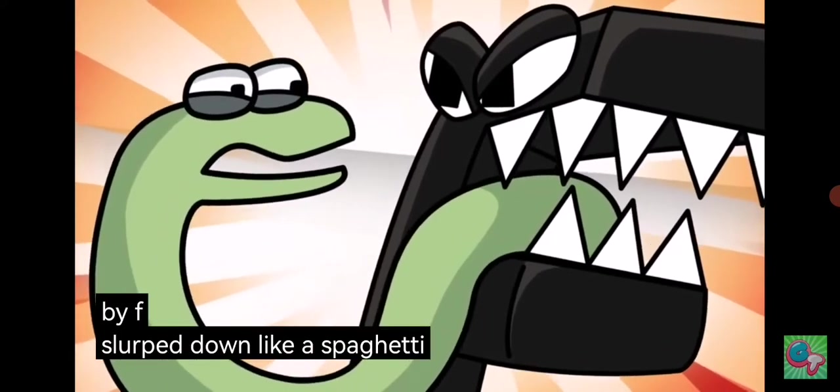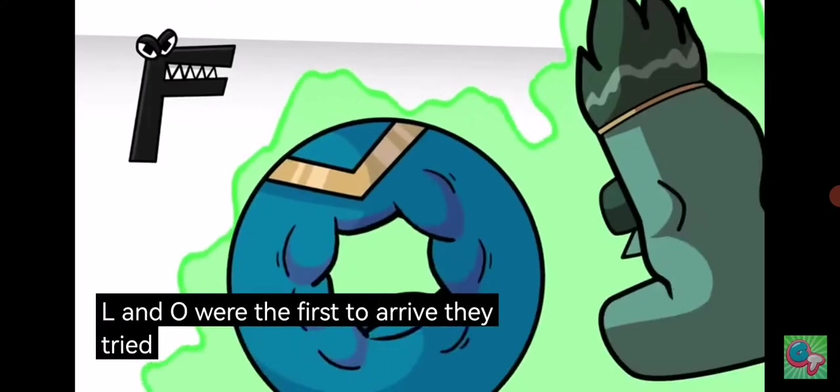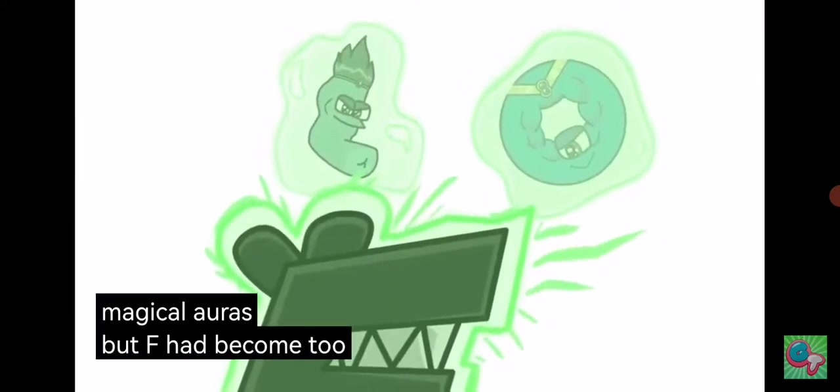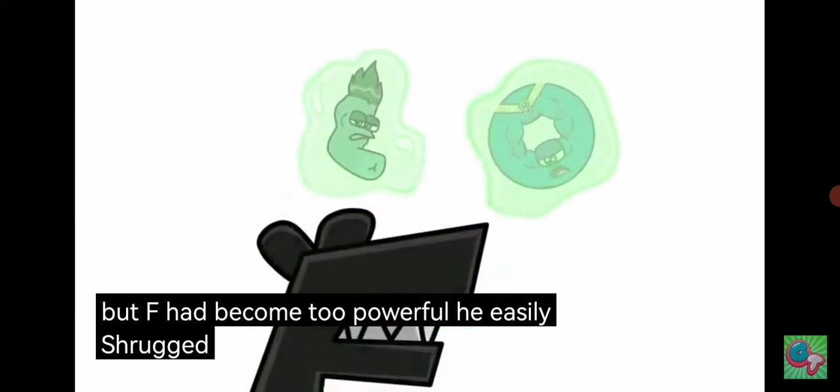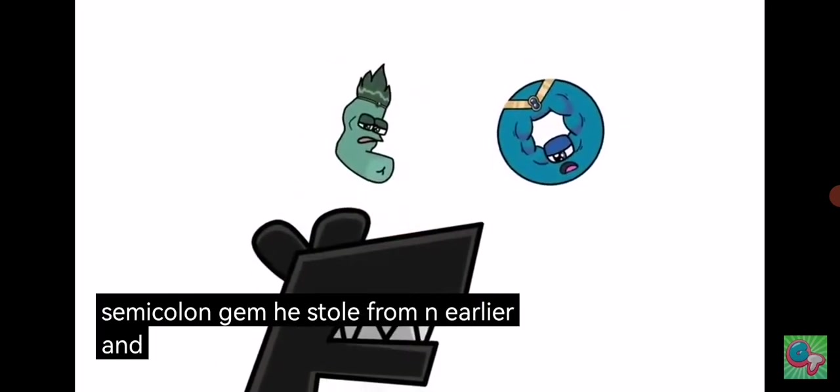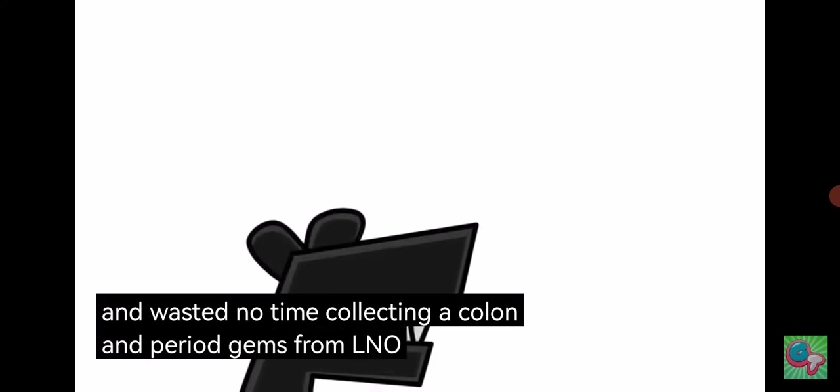L and O were the first to arrive. They tried to stop F in his tracks with their magical auras, but F had become too powerful. He easily shrugged off their attacks using the semicolon gem he stole from N earlier, and wasted no time collecting the colon and period gems from L and O.